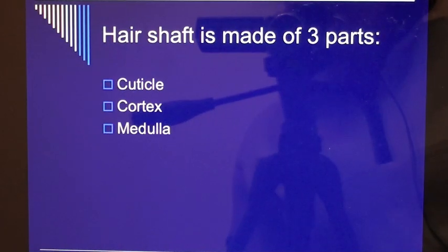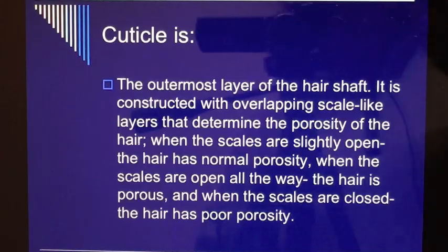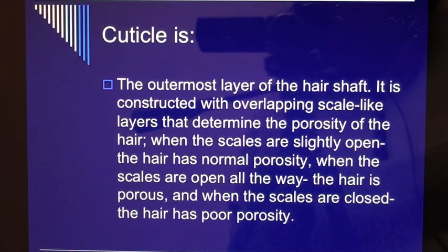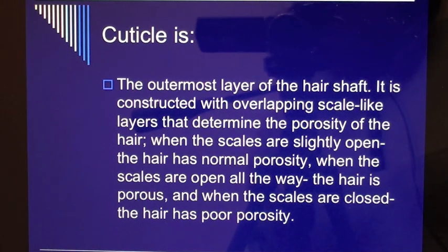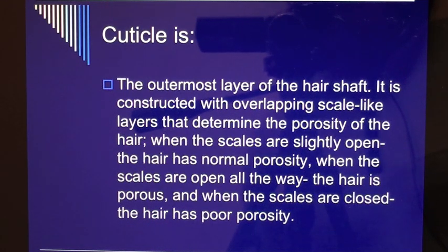The hair shaft is made of three parts: cuticle, cortex, and medulla. The cuticle is the outermost layer of the hair shaft, constructed with overlapping scale-like layers that determine the porosity of the hair. When the scales are slightly open, the hair has normal porosity. When the scales are open all the way, the hair is porous. When the scales are closed, the hair has poor porosity.